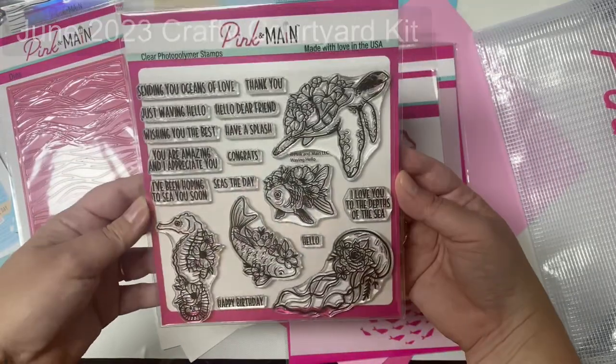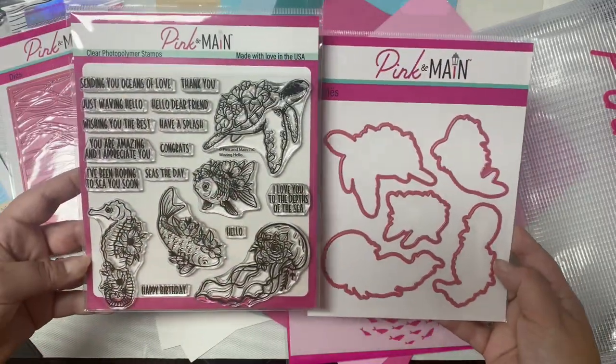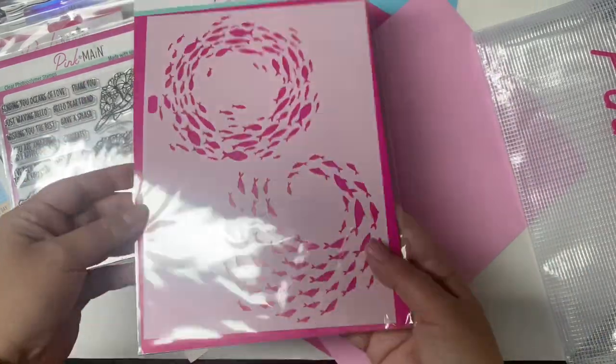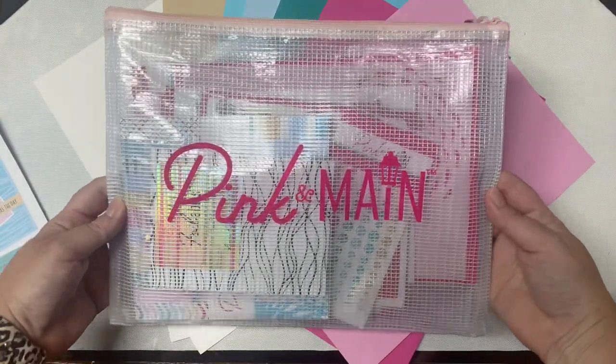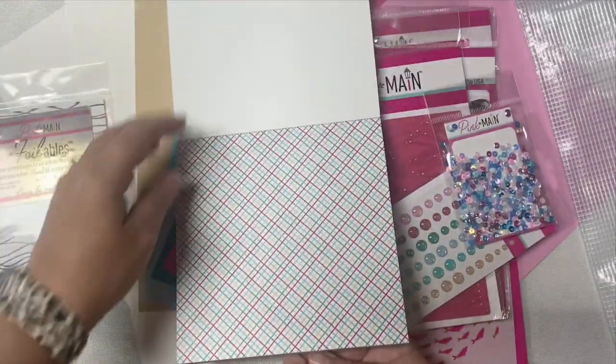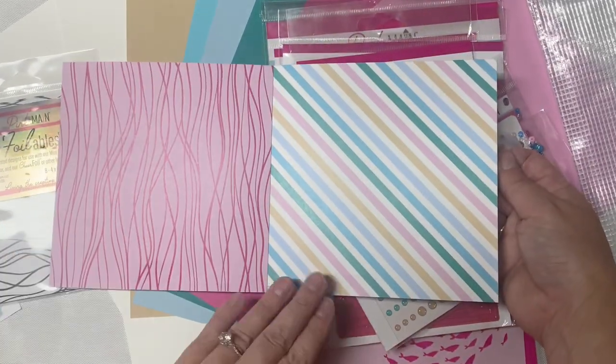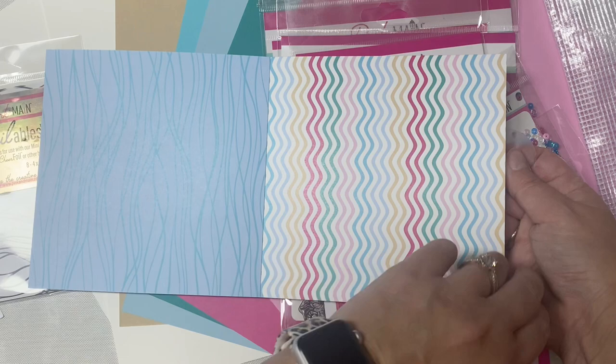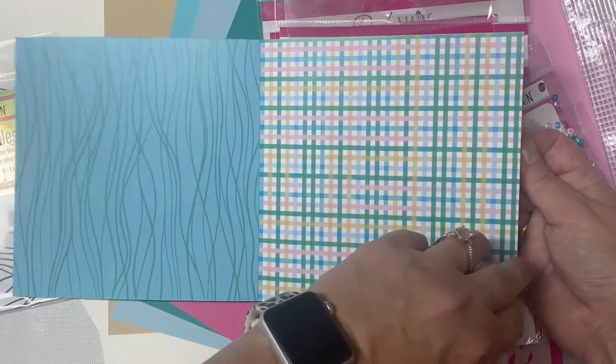I recently shared an unboxing video that shows all of the contents of this beautiful kit, so if you missed that video I will link it in the description box below. The Crafty Courtyard kits are one of the monthly subscription products available from Pink and Main. You can sign up to receive the kits each month and the base price is only $34.99. They usually ship around the 15th and shipping is based on where you live. You can still purchase the kits through the end of the month unless it sells out and I have a feeling this one is going to sell out quick.